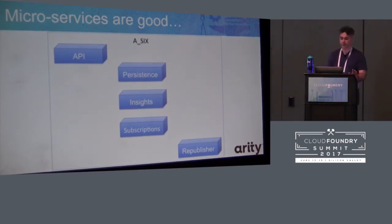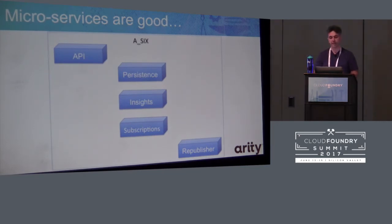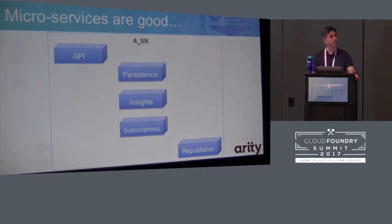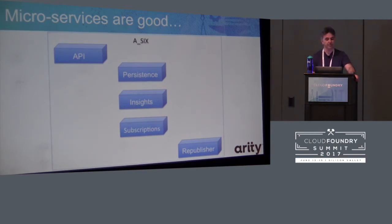Most of our performance problems were resolved by using microservices. However, the two biggest remaining issues were our persistence mechanism and our downstream customers in terms of pushing data to them. Their speed wasn't able to meet the target we'd been set, which was 7,000 concurrent messages per second.